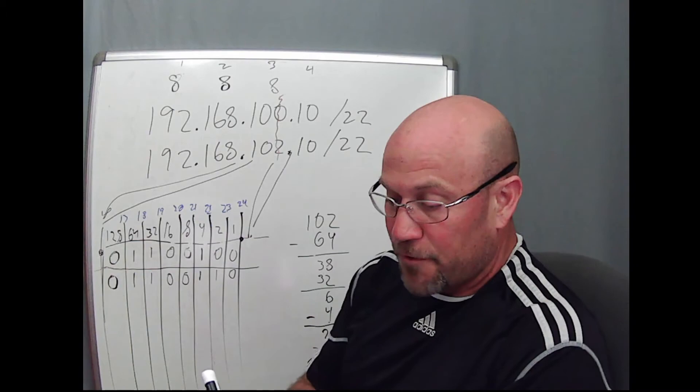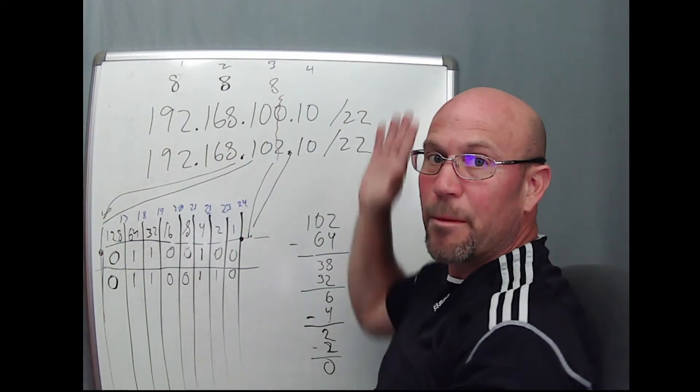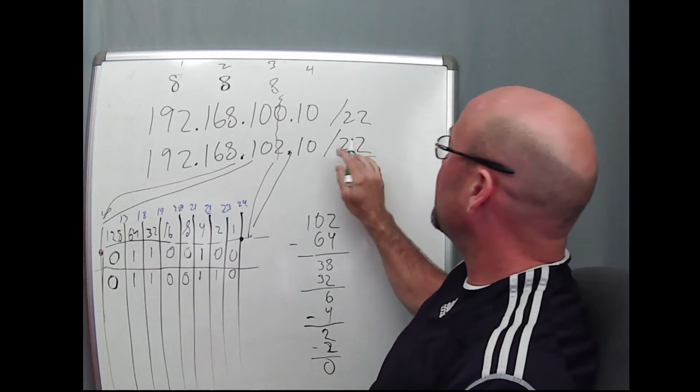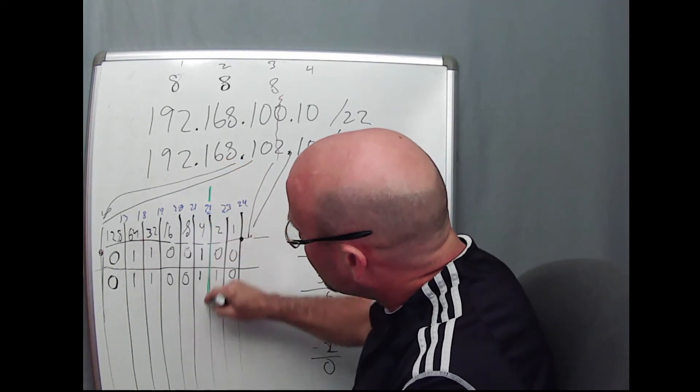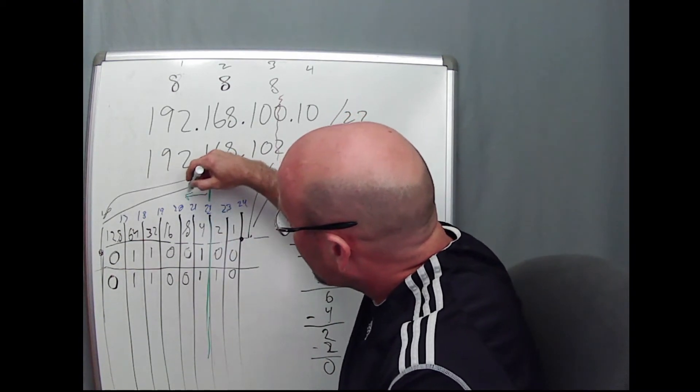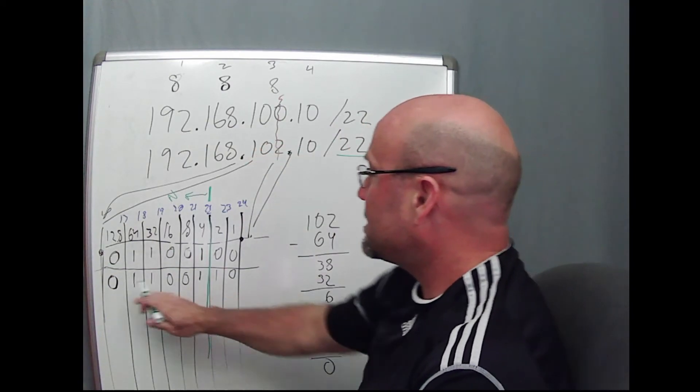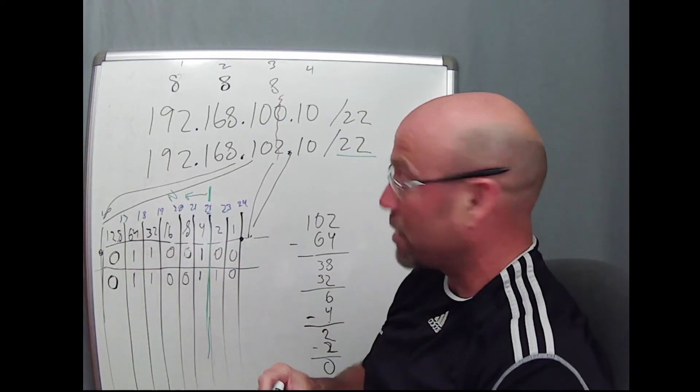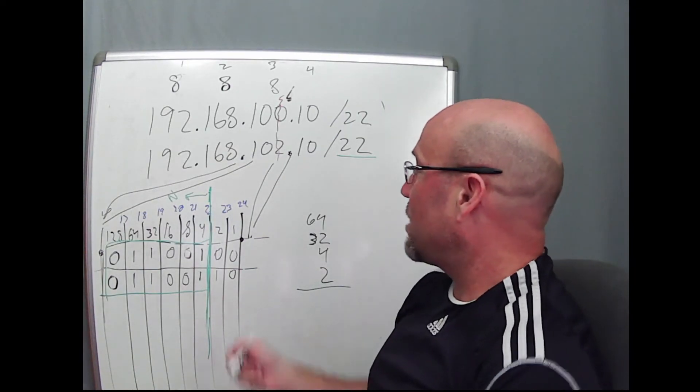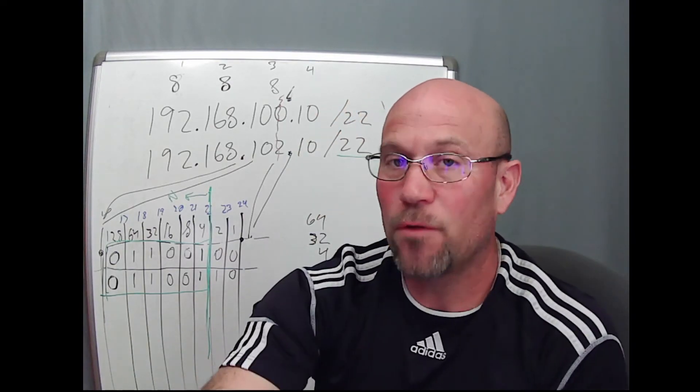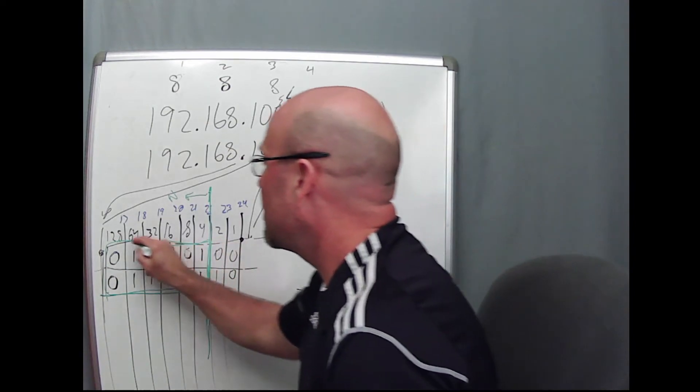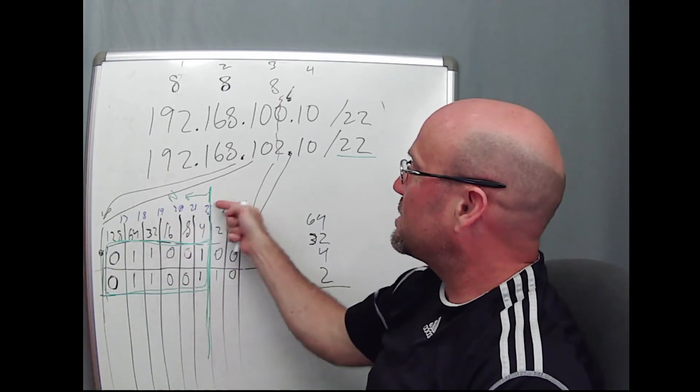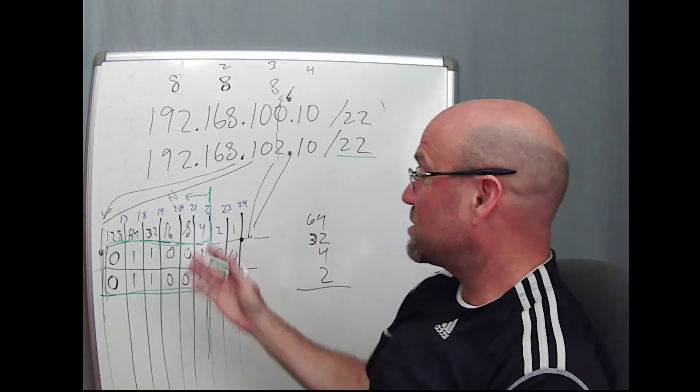Now you've converted decimal to binary on the octet in question where the mask drops, where the mask exists. So the slash 22 boundary is right here. This is where we need to decide, are the network bits over here common? The answer is yes. 0, 1, 1, 0, 0, 1, 1. They are common. That means they're on the same network. So it becomes obvious now that if you compare all these network bits, you can see that both of these IP addresses are on the same subnet. Just doing a stare and compare, you can see the network bits to the left of the mask are exactly the same.